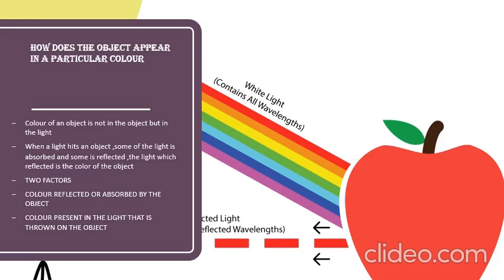The color of the object is not in the object but it is in the light. Whatever light you are going to throw, accordingly the color of the object will come outside. So if I am going to throw a red light, it will be different. If I am going to throw a blue light, it will be different. In that manner, your color of the object will change.